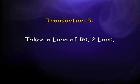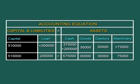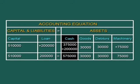Fifth transaction: we take a loan of rupees 2 lakh. The first aspect is receipt of cash of rupees 2 lakh as an asset, and the second is generation of a loan liability of rupees 2 lakh. Capital and liabilities total rupees 7,10,000 (capital 5,10,000 plus loan 2,00,000), while on the asset side cash increases from 3,75,000 to 5,75,000, making total assets also rupees 7,10,000.